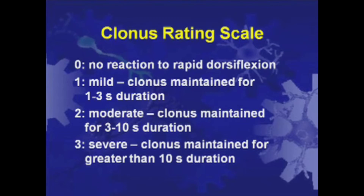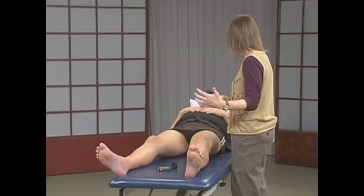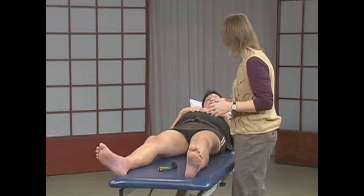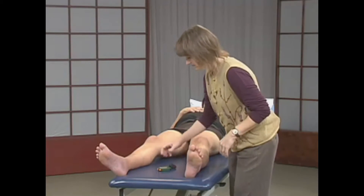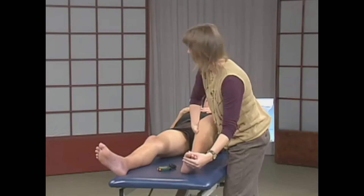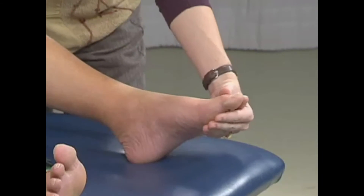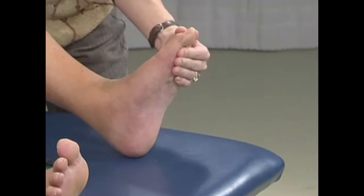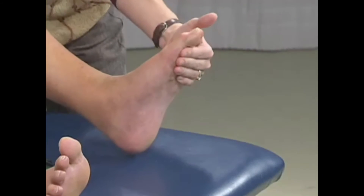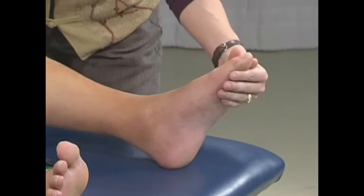Now Tina will demonstrate the clonus test. I'm going to take your ankle and give it a quick stretch, and I'm looking to see if there are a few beats of reflex in there, and we're going to time it. Just relax for me. In this example, our patient did not have clonus. His SCATS clonus score was zero.